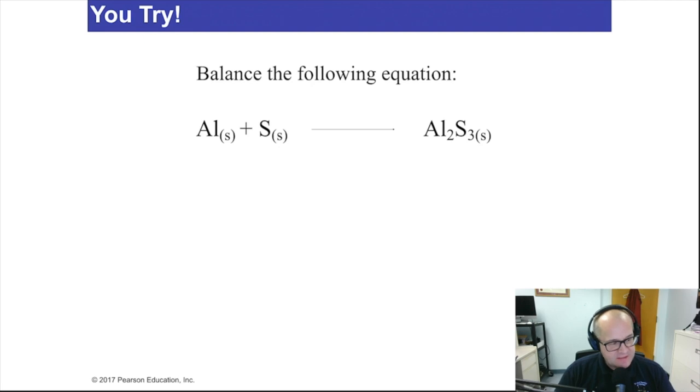All we're allowed to do is change the coefficient in front of each chemical symbol. You cannot change these numbers, ever. Don't ever change the chemical symbol, ever. Do not change the chemical symbols, ever. Because if you do, you're making either the question very easy or very hard and it's always wrong. All you can do is put numbers in front. That's all you're allowed to do. Change the coefficient.